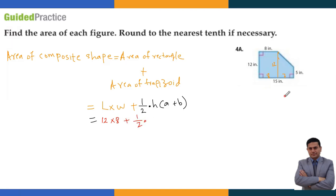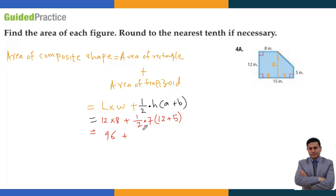Area of trapezoid equals half times height times sum of parallel sides (a + b). The height is 7, which is the side at 90 degrees. The two parallel sides are 12 and 5, so a + b equals 12 plus 5 equals 17. Rectangle area: 12 times 8 equals 96. Trapezoid area: 7 divided by 2 equals 3.5, and 3.5 times 17 equals 59.5. Total: 96 plus 59.5 equals 155.5.